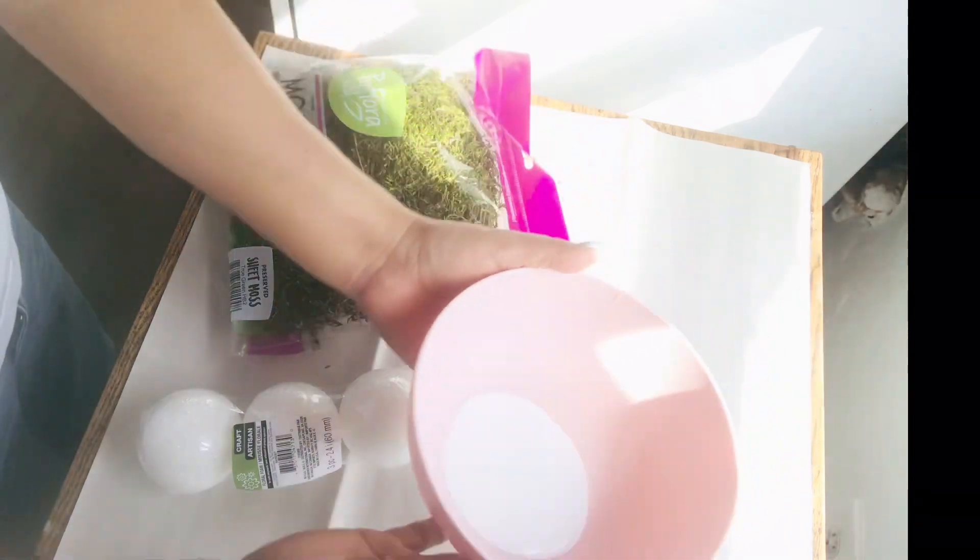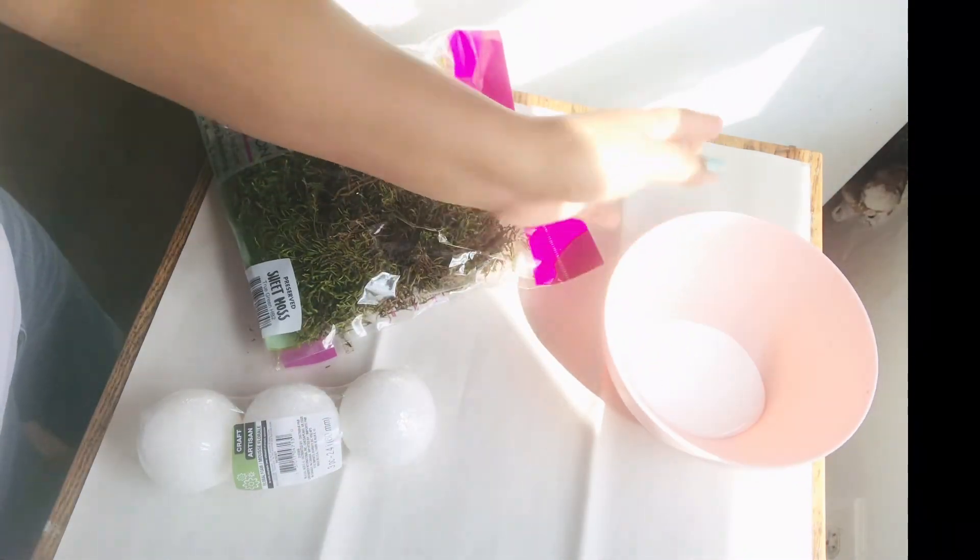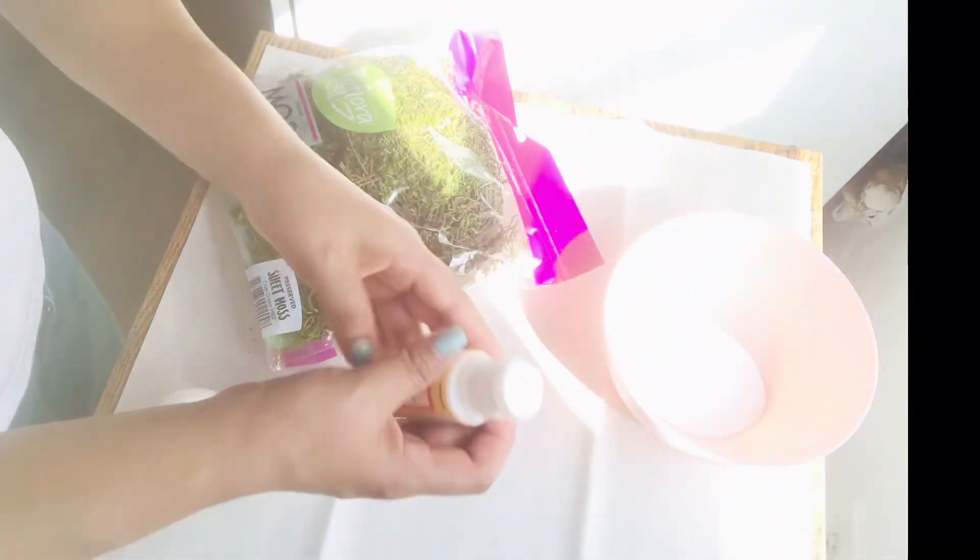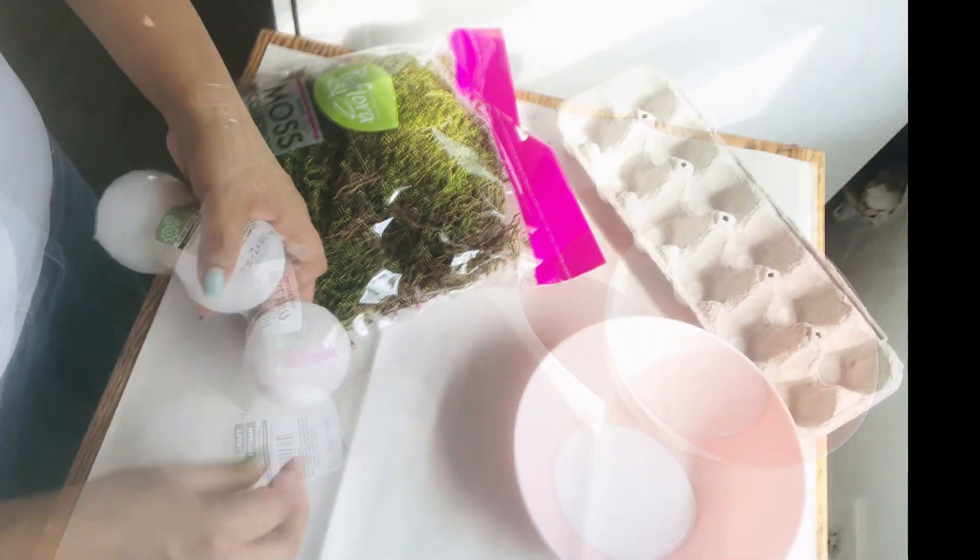For my first DIY I'm going to make a moss sphere decor and for this I'm going to use these Styrofoam balls from Dollar Tree, a little bit of mod podge and moss.